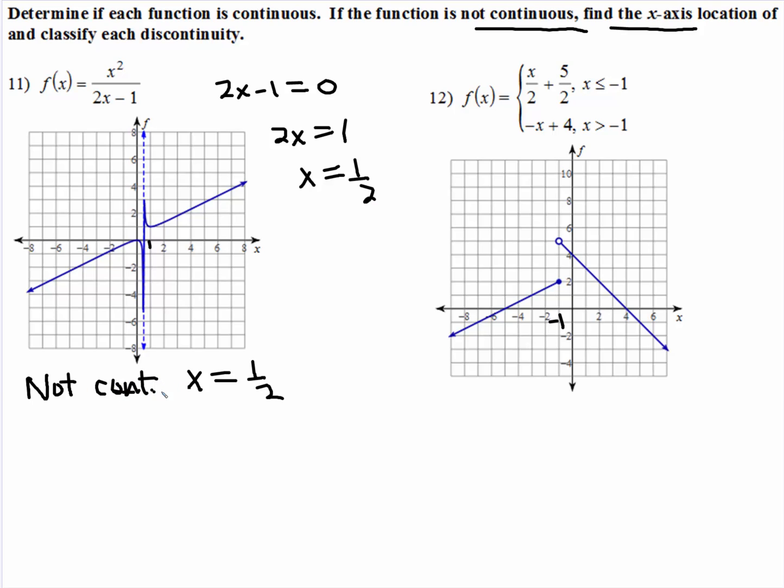But I want you to write the word not continuous. And then, what type of discontinuity? Well, both of those, on both sides of where x equals one half, the graph is headed either to positive or negative infinity. This is called essential, or another way to name that is infinite. Infinite discontinuity, and I want you to write out the word discontinuity.